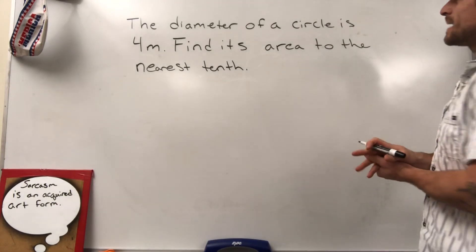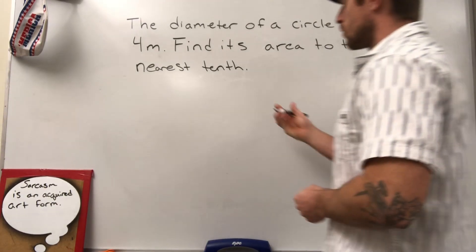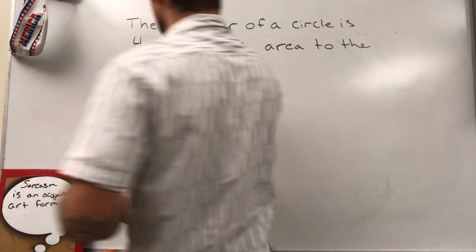All right, we got ourselves a doozy. The diameter of a circle is four meters. Draw yourself a circle, step one.